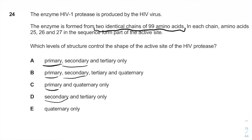We have tertiary protein structure, which occurs when certain attractions are present between the alpha helices and the pleated sheets. And we have, most importantly, the quaternary protein structure, which is when the protein consists of more than one amino acid chain.